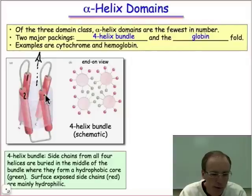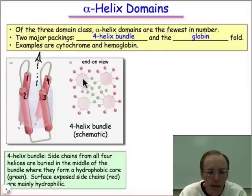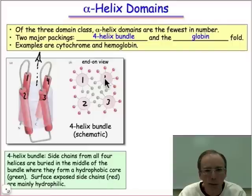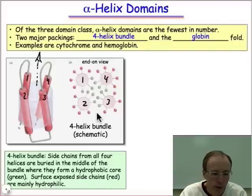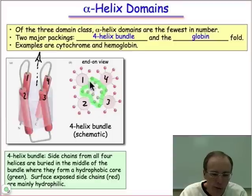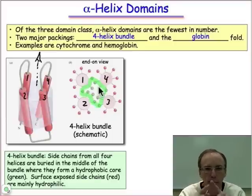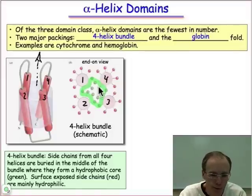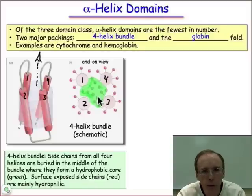Numbering this in the same way that it follows the N-to-C sequence and then looking at the top-down view, we number the cylinders in the same way. The cylinders go around in this direction, and what we can see are green and red spheres representing amino acid side chains. Remember that the α-helix has side chains that radiate from the center of the cylinder. The green side chains that come together in the core are mostly hydrophobic amino acids like leucine,